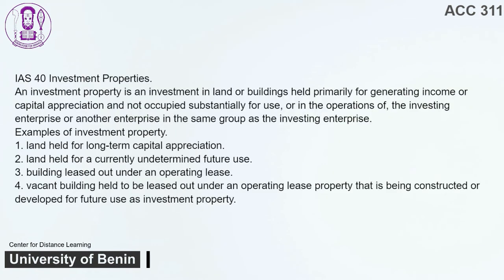IAS 40 — Investment Properties. An investment property is an investment in land or buildings held primarily for generating income or capital appreciation and not occupied substantially for use in the operations of the investing enterprise or another enterprise in the same group. Examples of investment property: 1. Land held for long-term capital appreciation. 2. Land held for a currently undetermined future use. 3. A building leased out under an operating lease. 4. Vacant buildings held to be leased out under an operating lease, or property being constructed or developed for future use as an investment property.